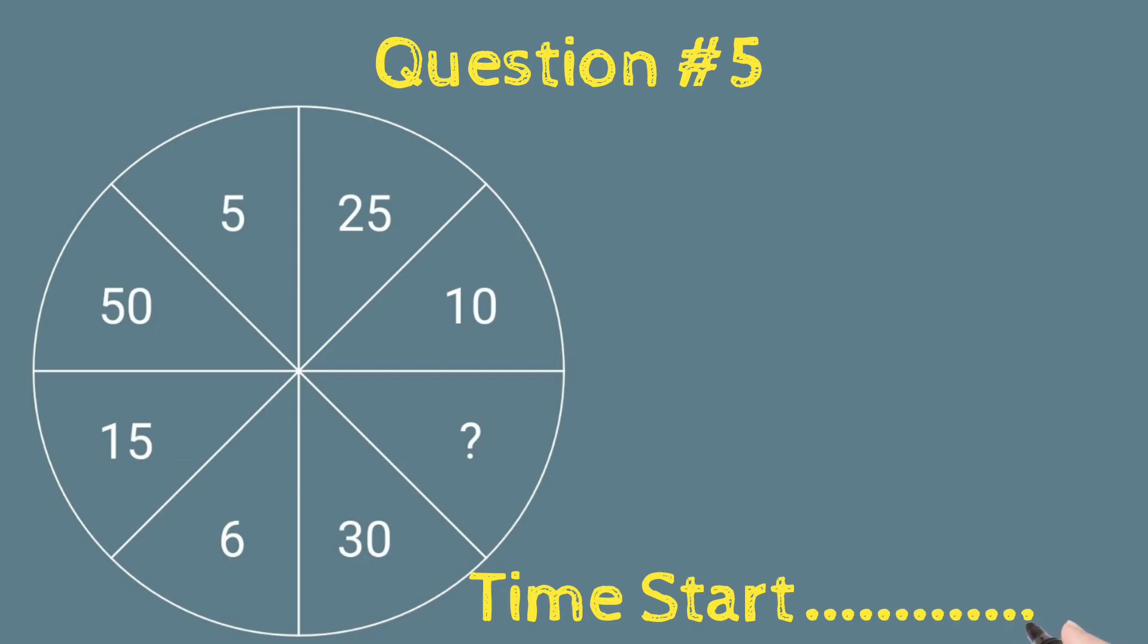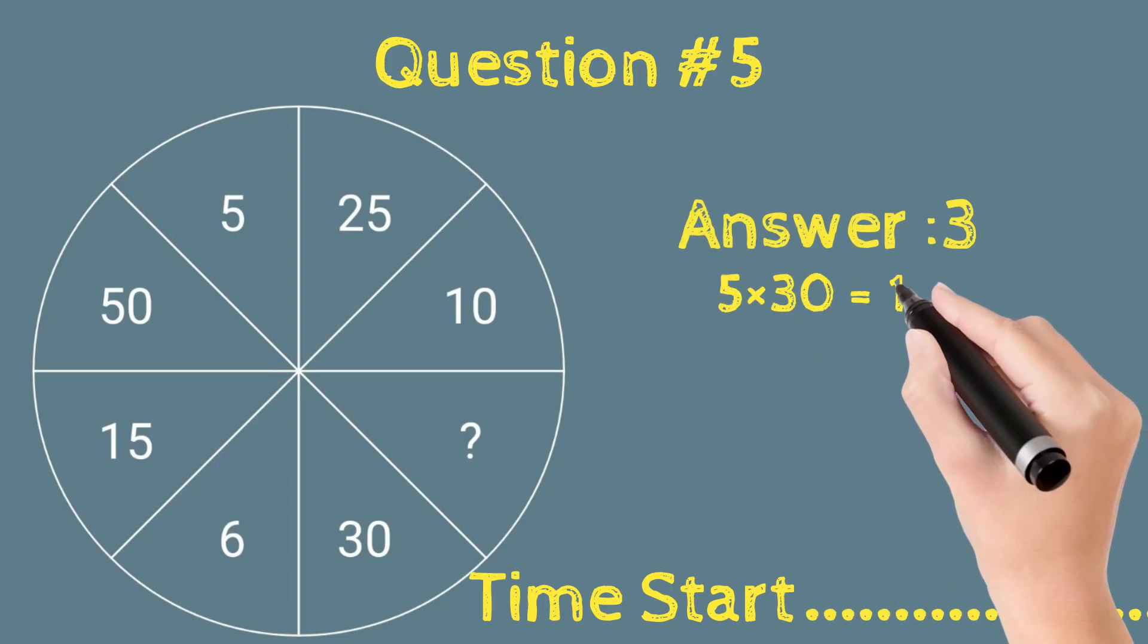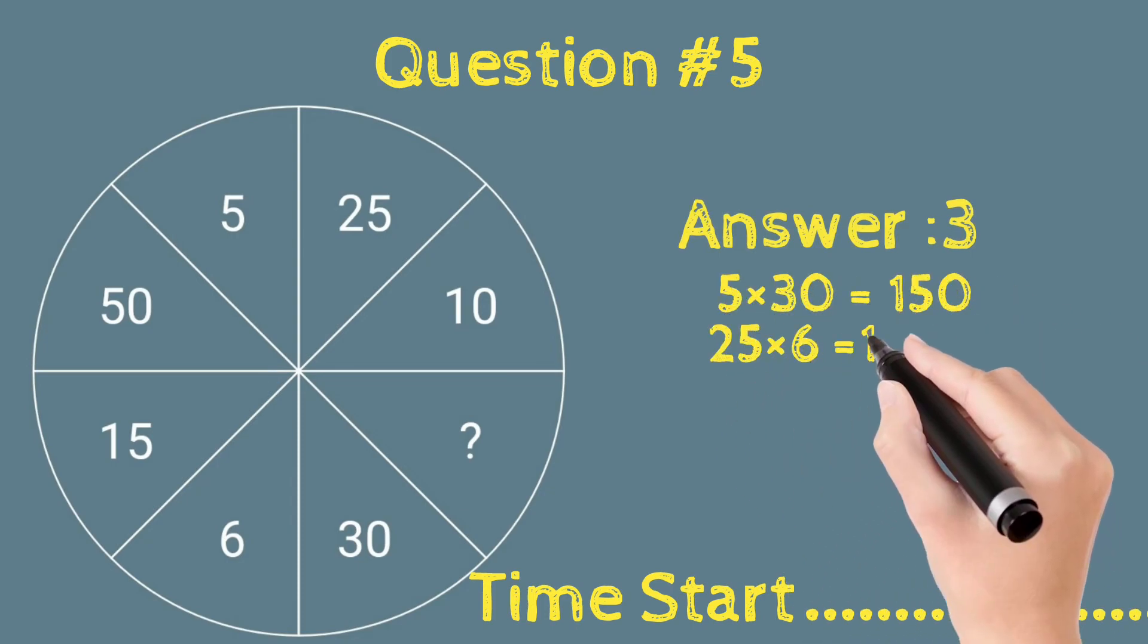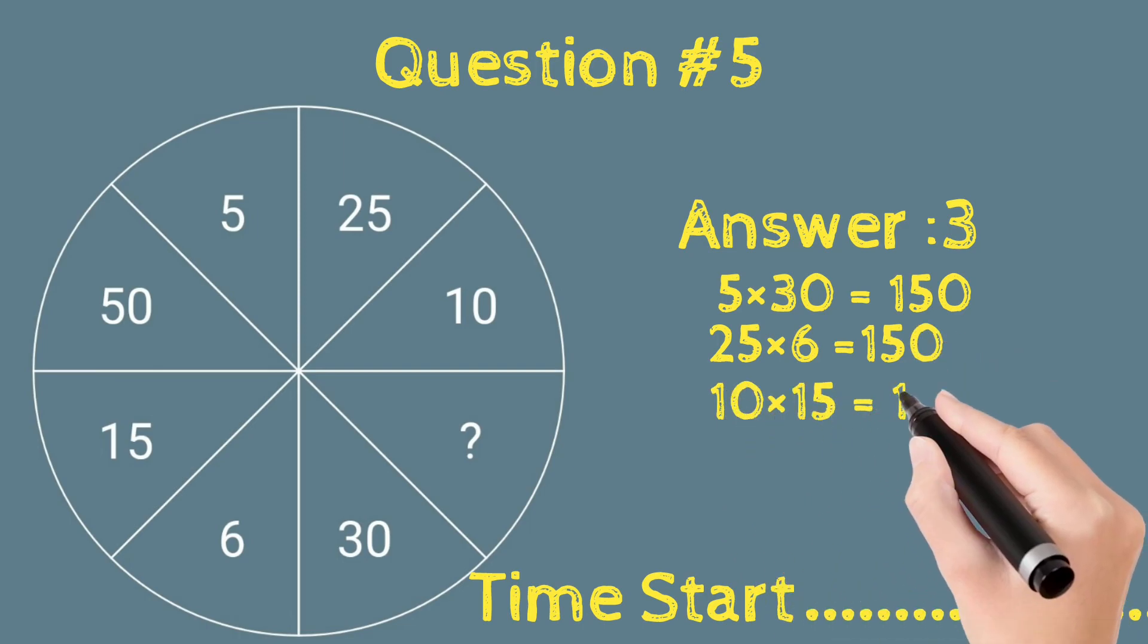observe this figure. And your time's up! And the answer will be 3 because 5 into 30 = 150, 25 into 6 = 150, 10 into 50